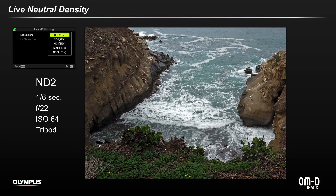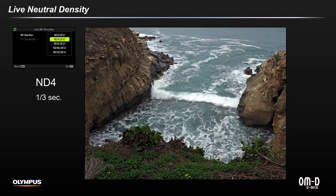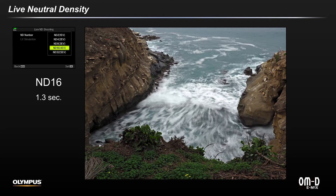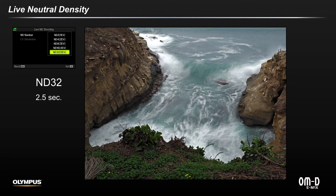This sequence shows the effects at each of the available EV levels. Here's ND2, and ND4, ND8, ND16, and here at a shutter speed of 2.5 seconds, ND32.